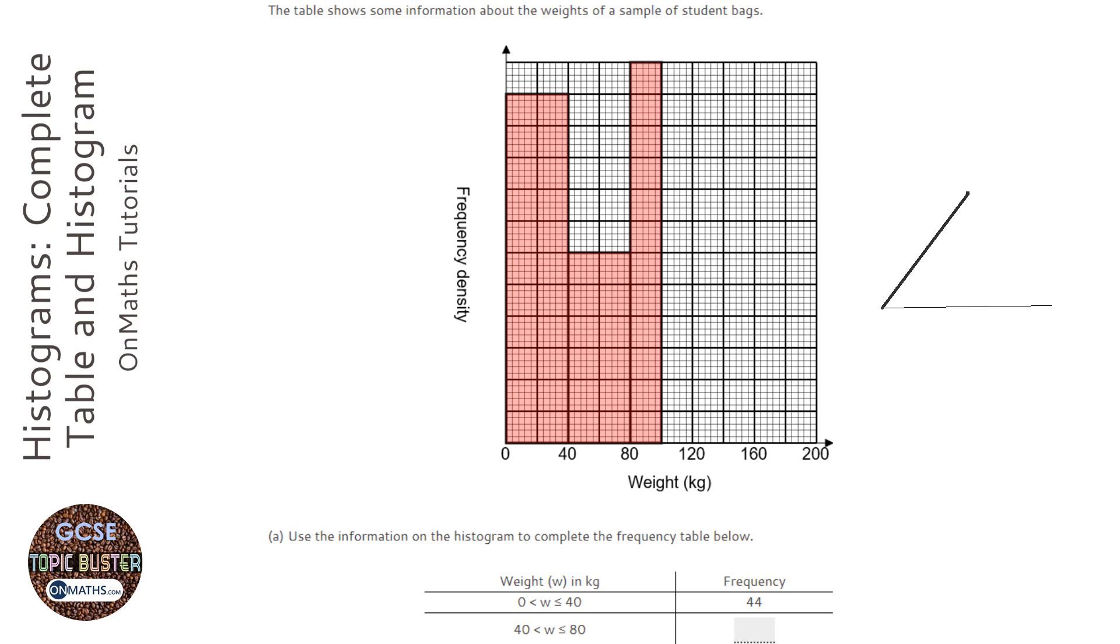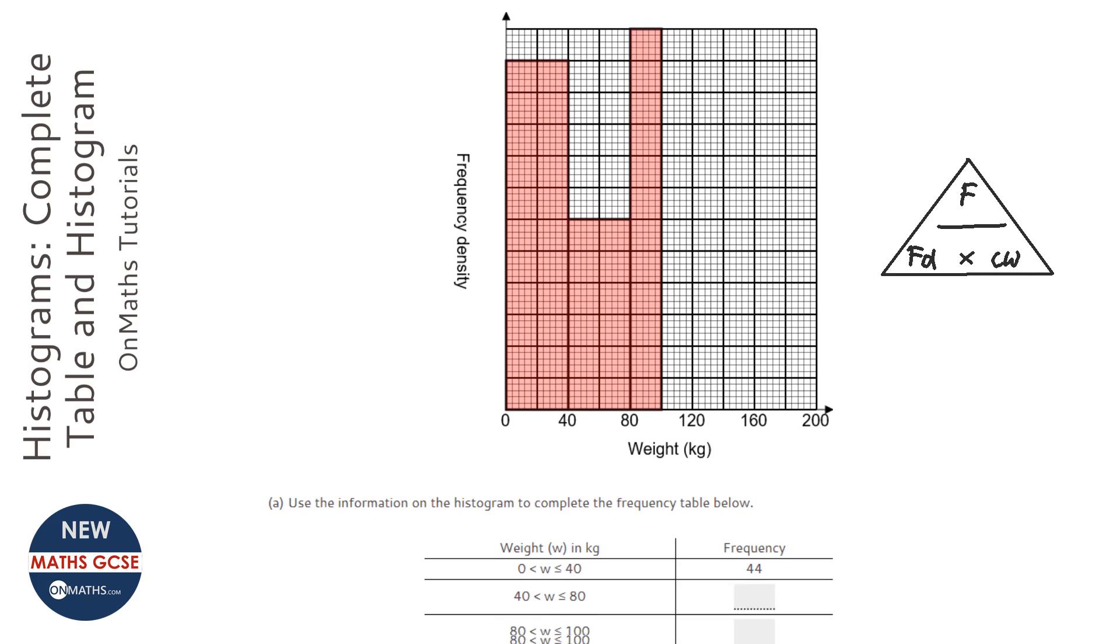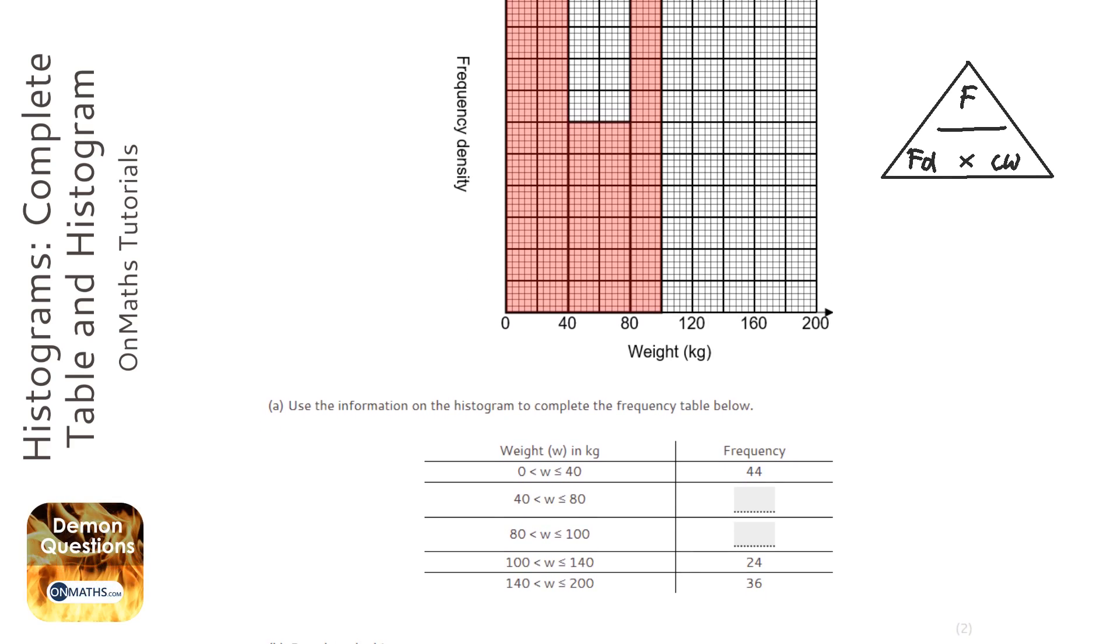The formula has frequency at the top and frequency density and class width at the bottom. And it works the same way as speed, distance, time and all of those ones.